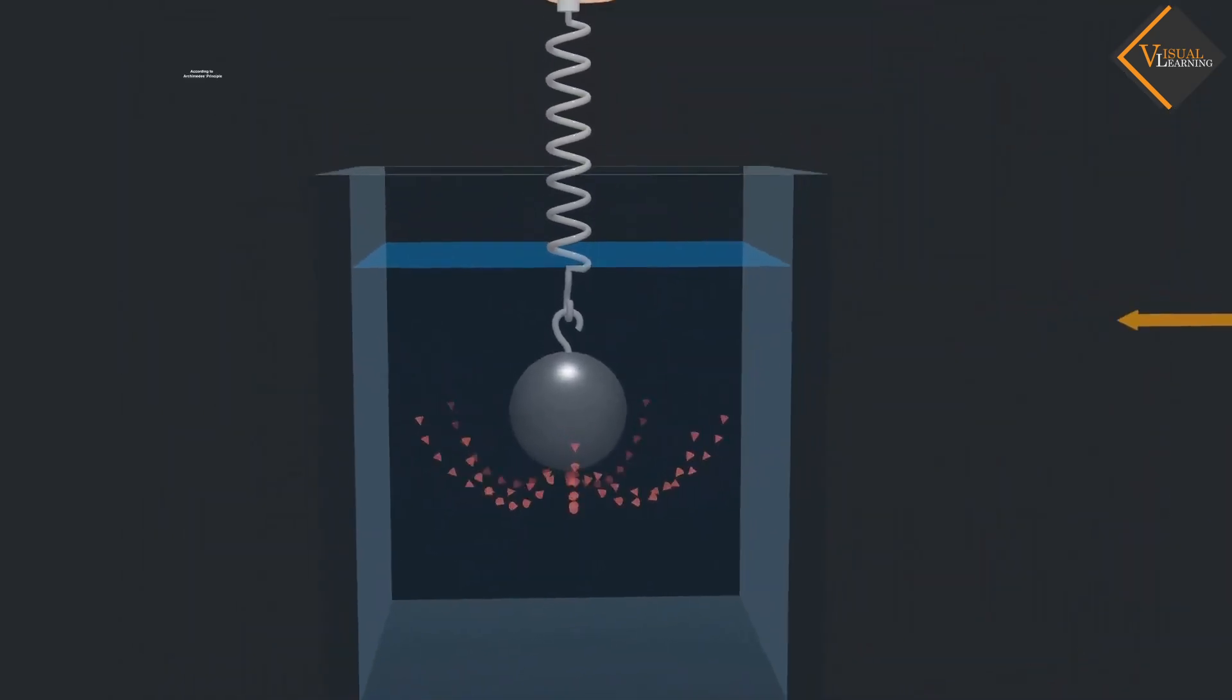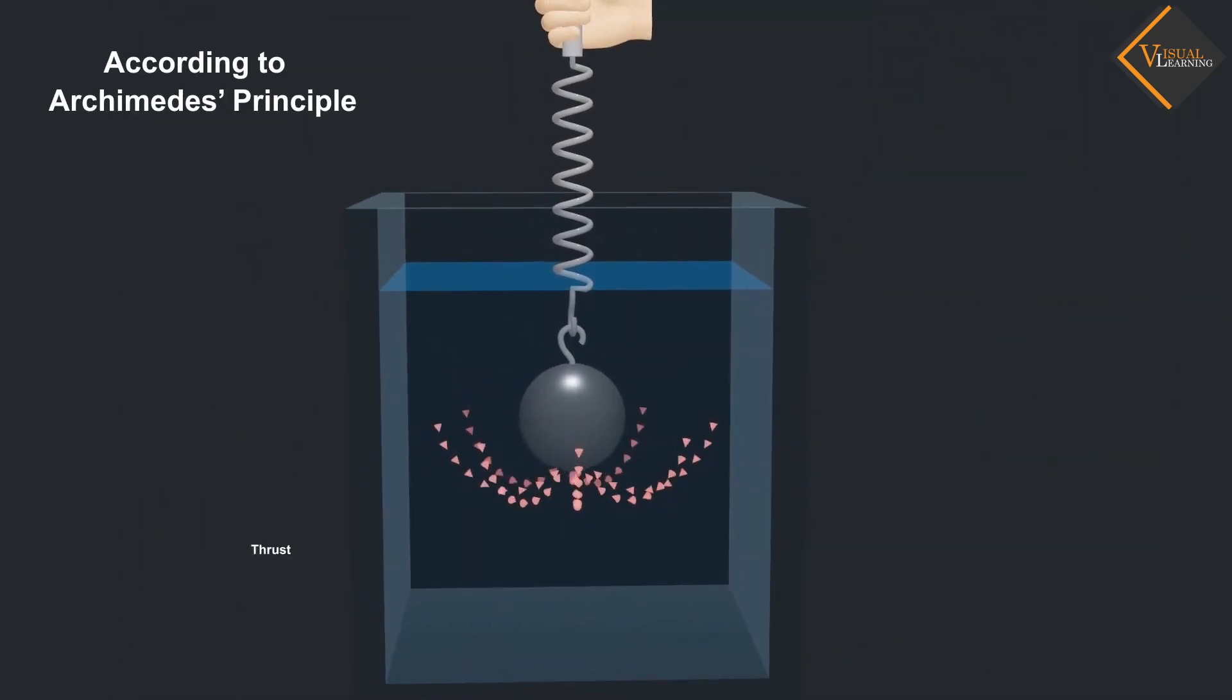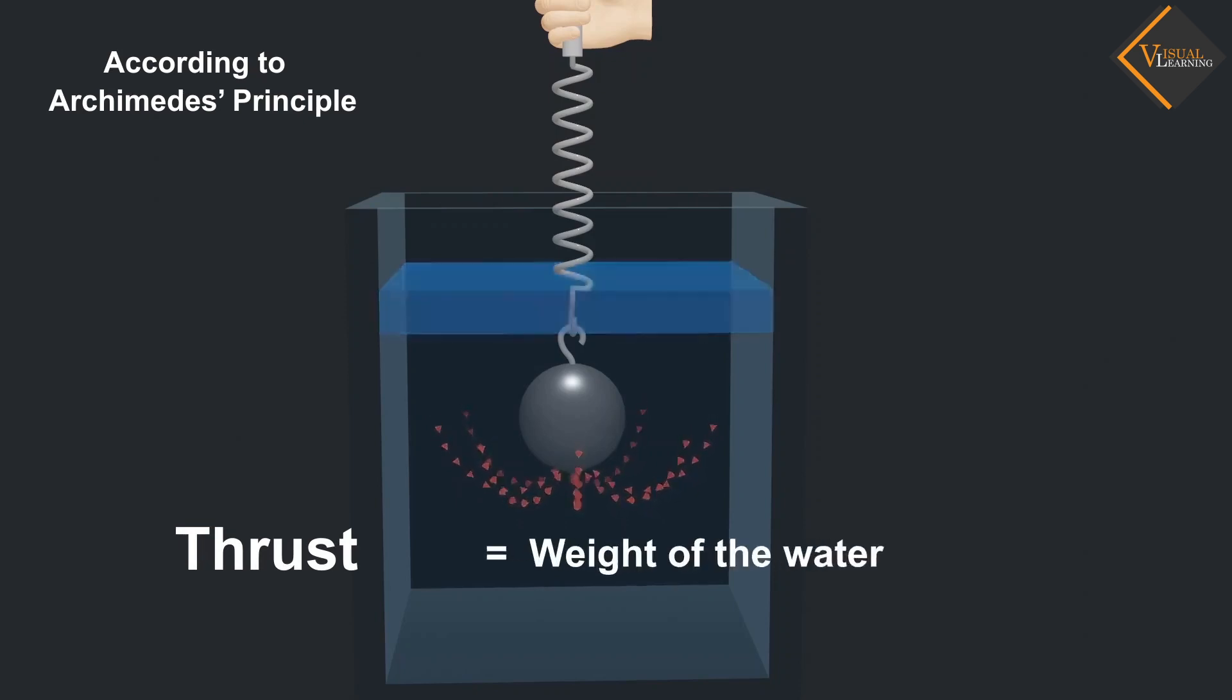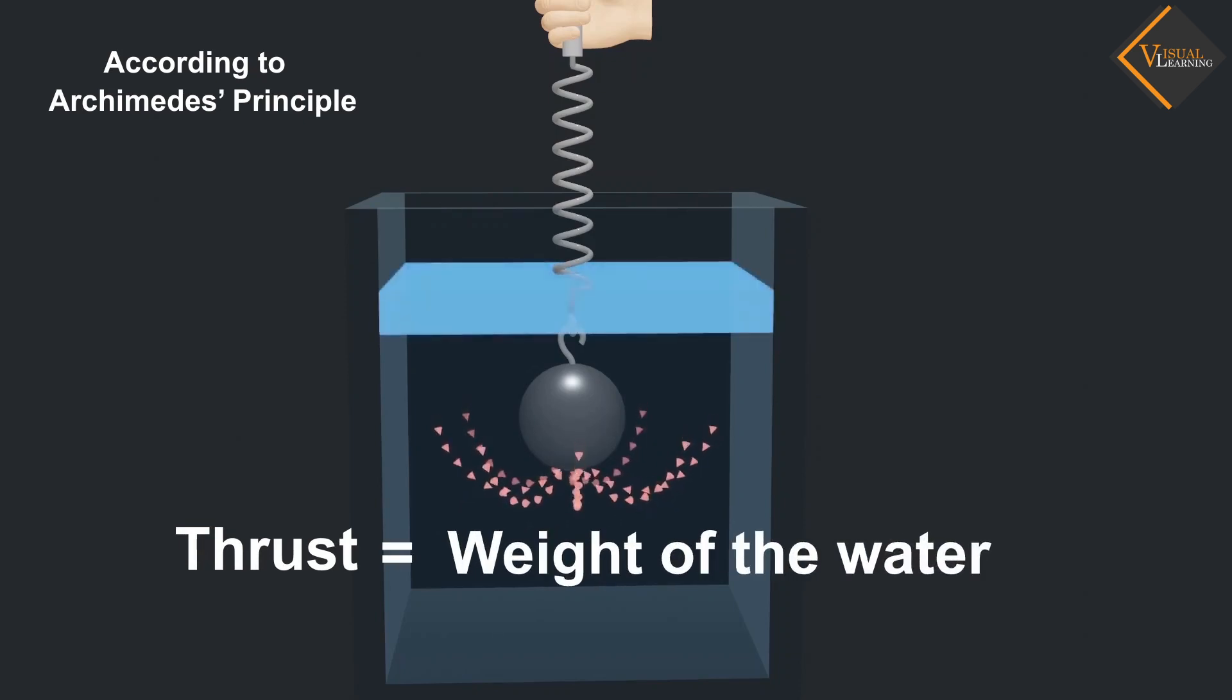Now, according to Archimedes Principle, this upward thrust is equal to the weight of the water displaced by the iron ball.